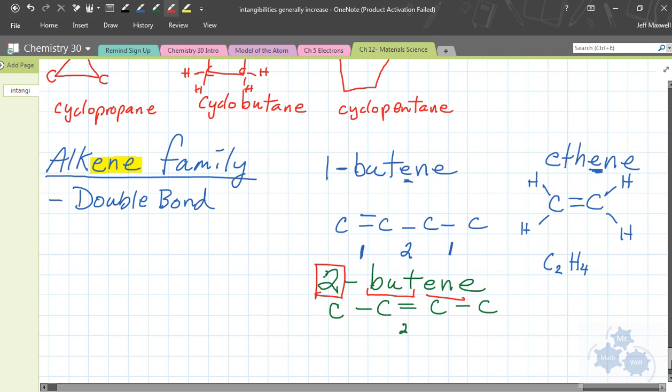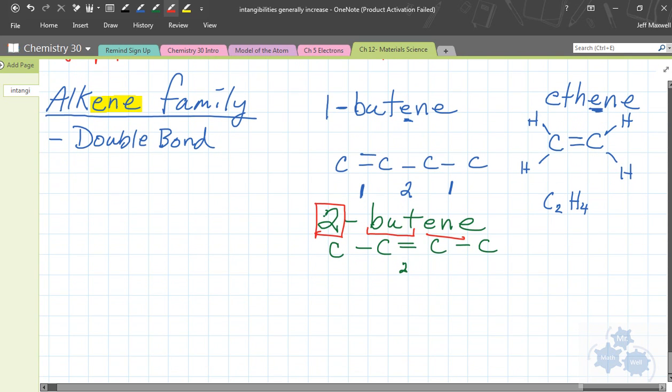Why don't you guys draw 3-hexene? Go ahead and draw 3-hexene. Take a moment and do that. So there's your structural diagram for 3-hexene. This is the 1, 2, third position, that's where the double bond is. Third position, 6 carbons, double bond.